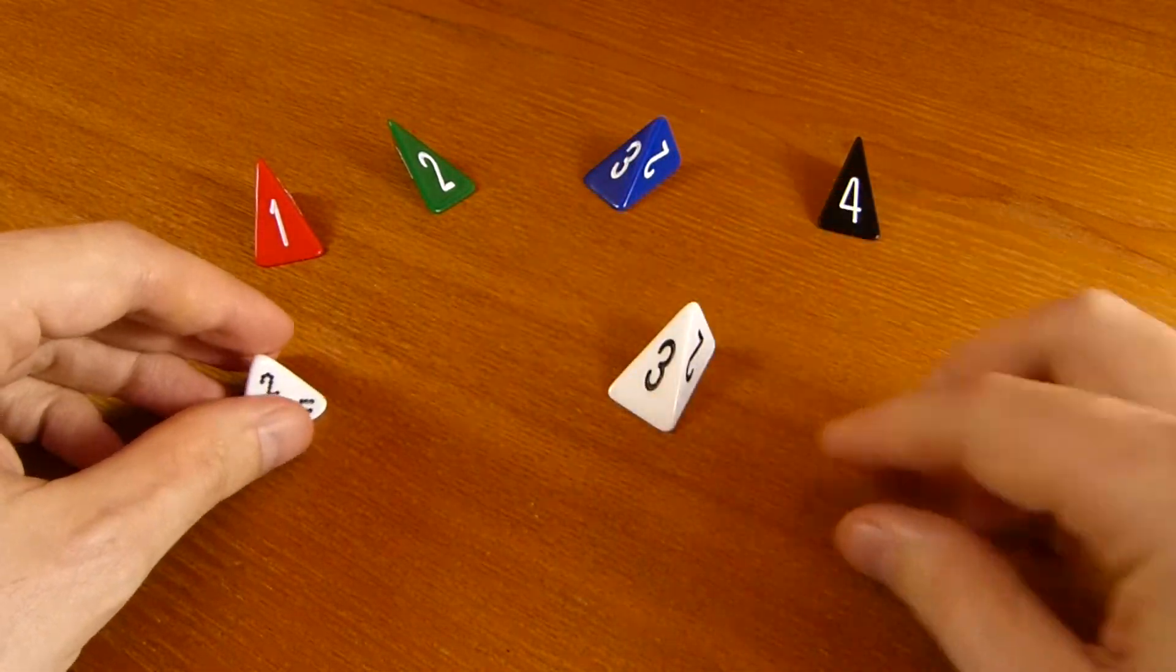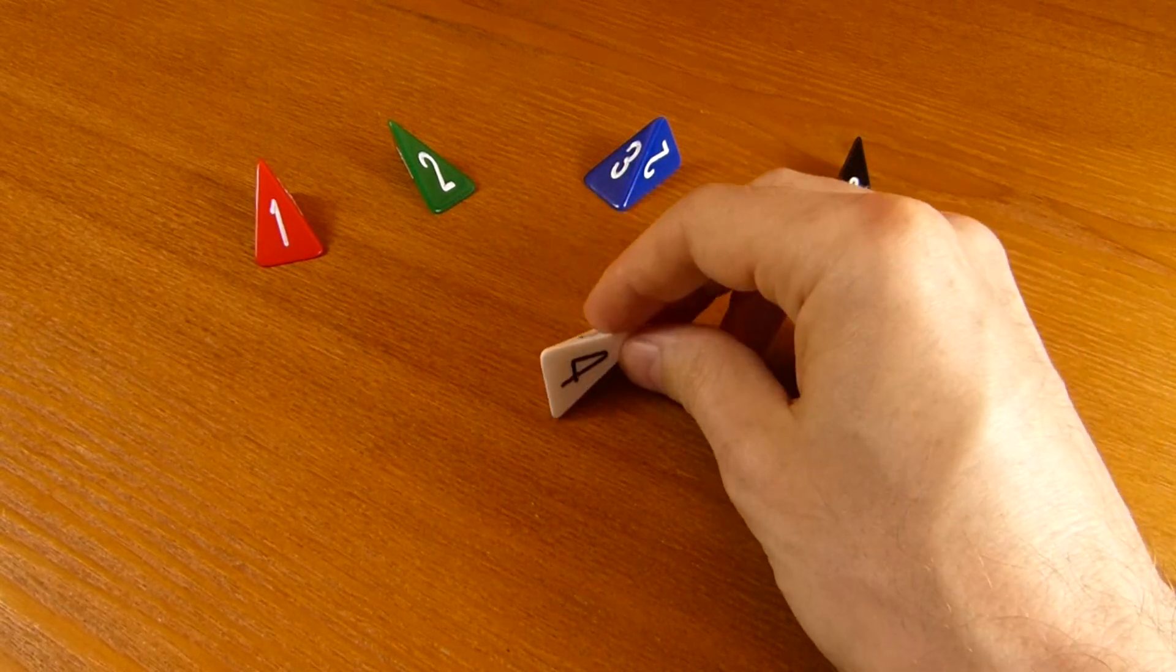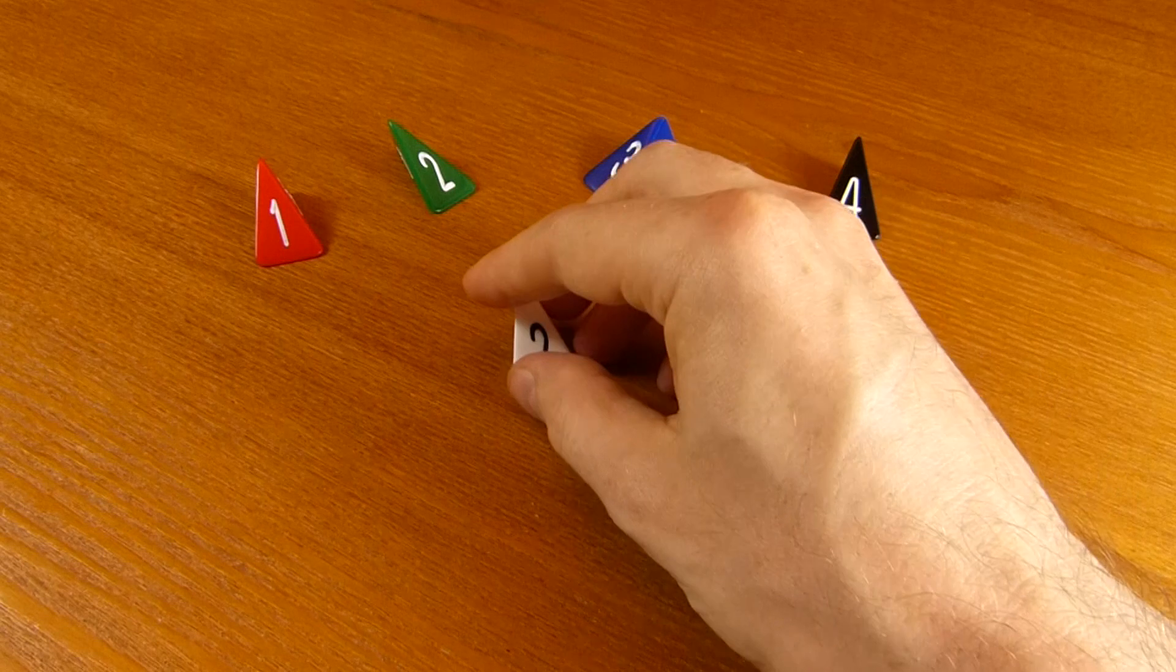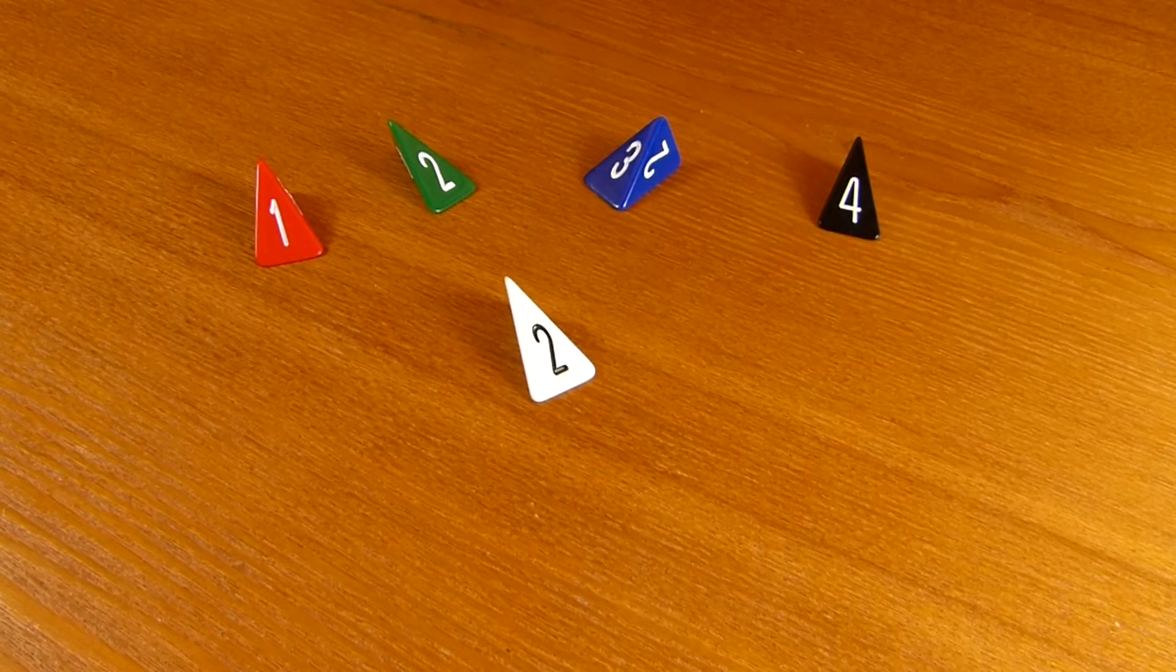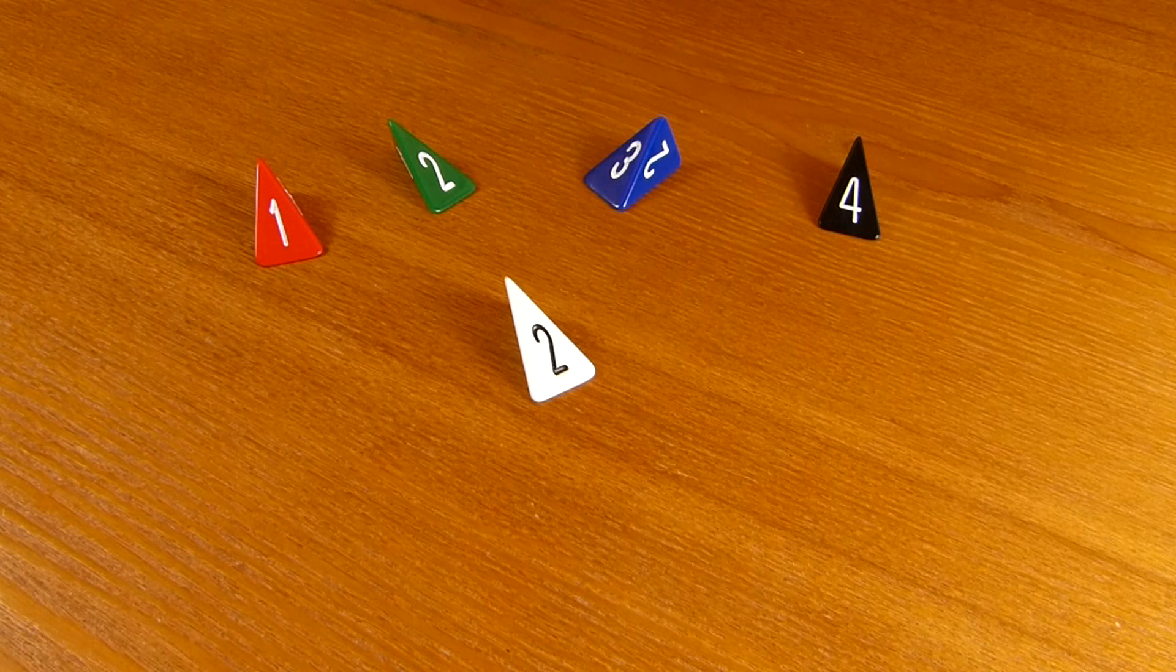So no advantage in how well they roll, but there's a definite advantage in the readability of the number and the interestingness of the shape that we get. So this is the skew D4 by the Dice Lab. Thanks for watching.